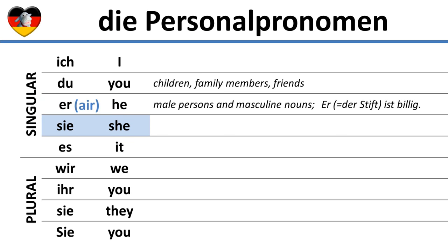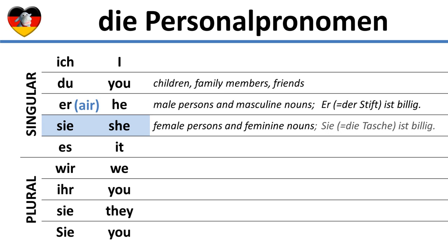Sie follows the same principle. It is used just like she in English, and it is also used to refer to a feminine noun, in which case we would use it in English. For example, in German the bag, die Tasche, is feminine. When we want to say it, the bag, is cheap, in German we would have to use sie because we have to use the feminine pronoun for a feminine noun. The sentence would be: sie ist billig.